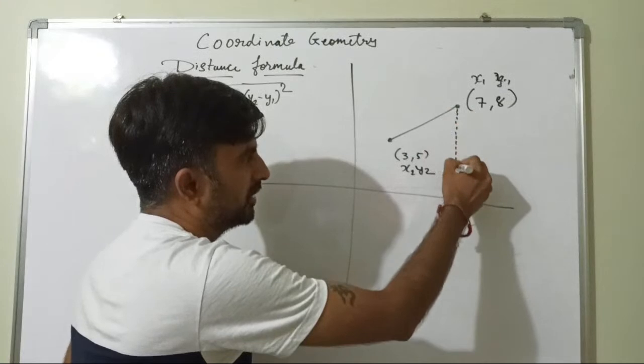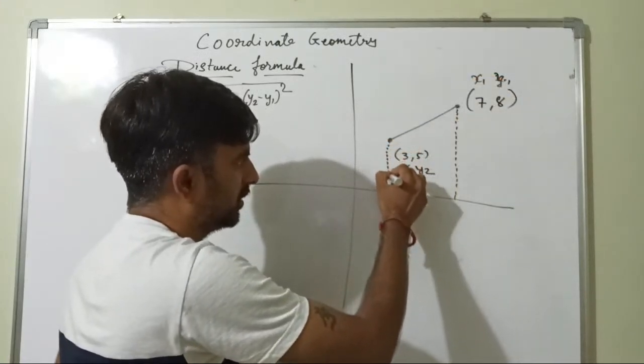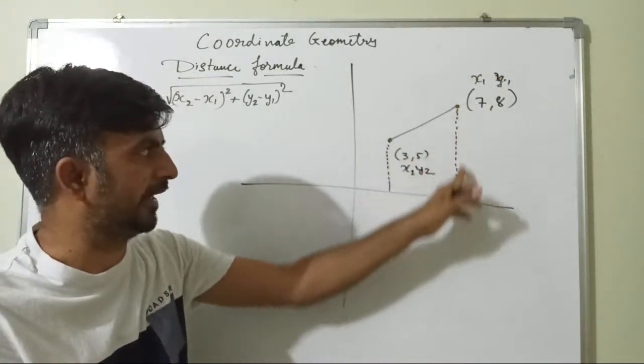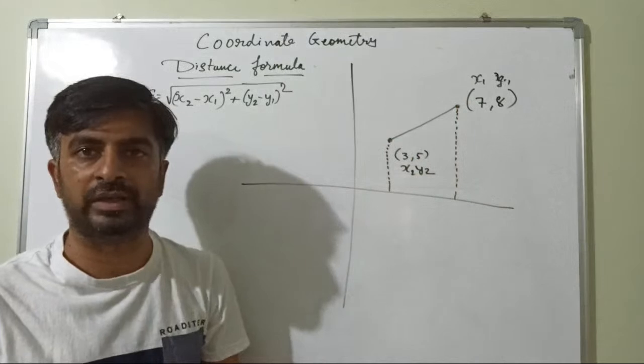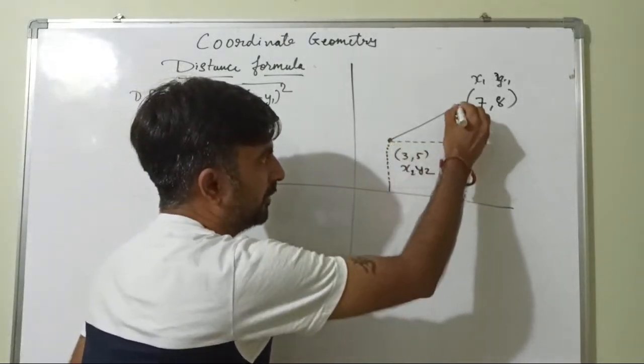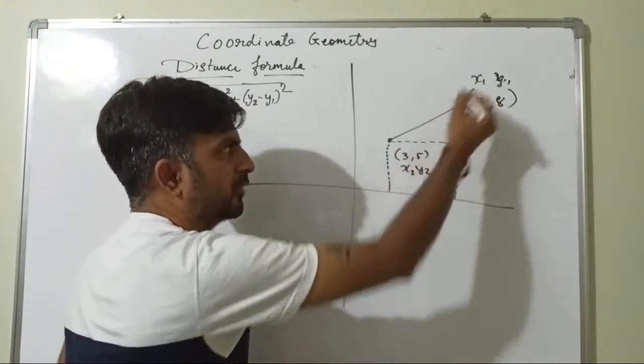First, you can find out this distance with the help of x1, this distance with the help of x2. Now, if you will subtract x1 minus x2, what you will get? You will get this part, this much part. If you will subtract x1 minus x2 or x2 minus x1.